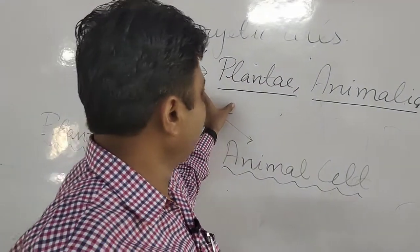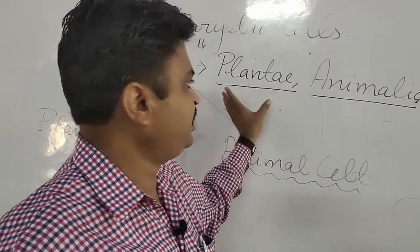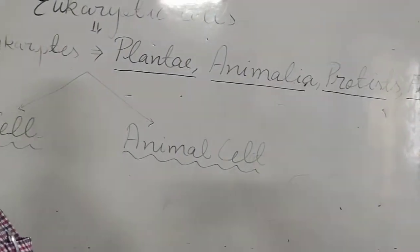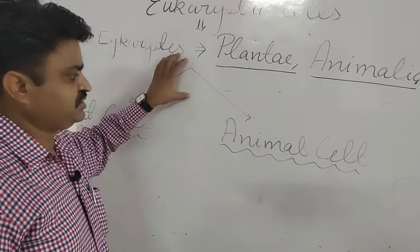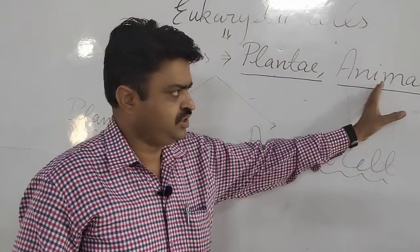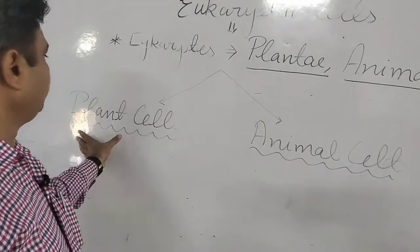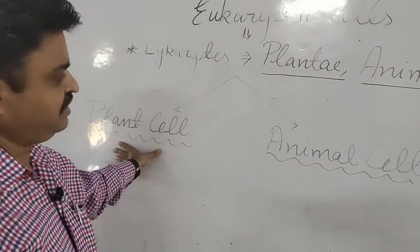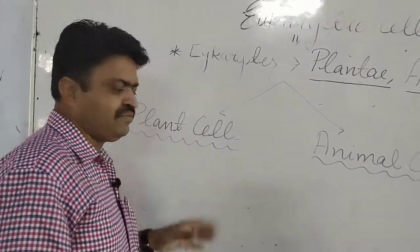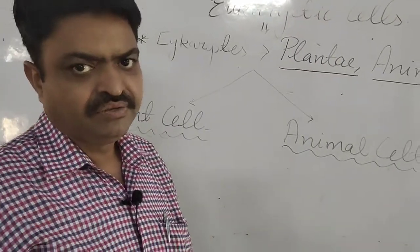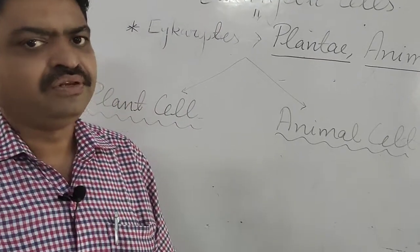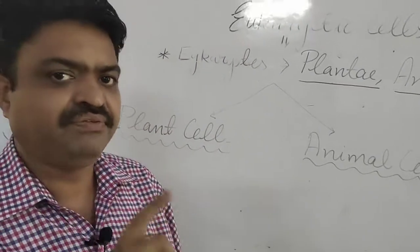Eukaryotic cells are found in plantae, animalia, protists, and fungi. According to plantae and animalia, there are two types of cells: plant cell and animal cell. Plant cell and animal cell have totally different structures from each other, and today we will discuss how they differ.